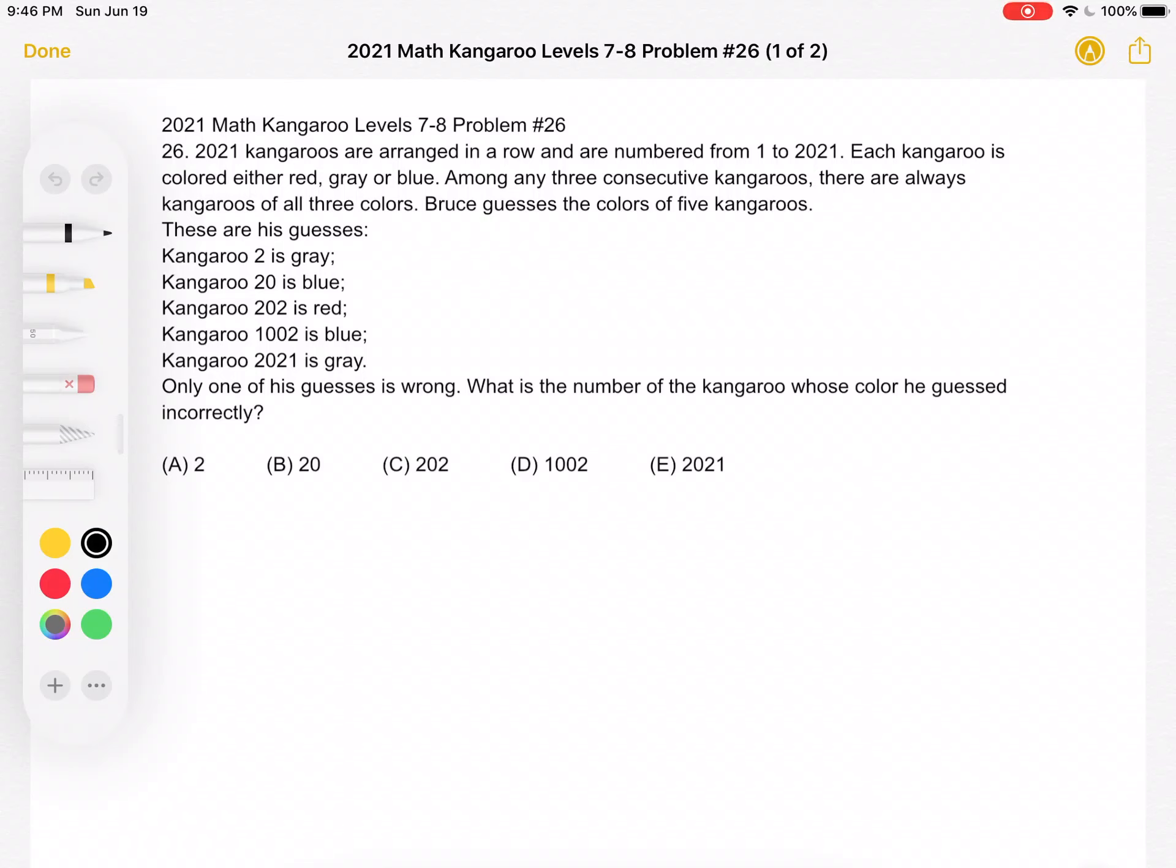This is the 2021 Math Kangaroo Level 7-8 Problem Number 26. 2021 kangaroos are arranged in a row and are numbered from 1 to 2021. Each kangaroo is colored either red, gray, or blue. Among any three consecutive kangaroos there are always kangaroos of all three colors.